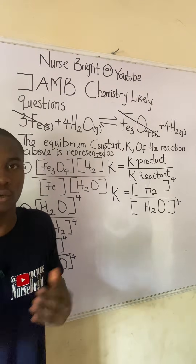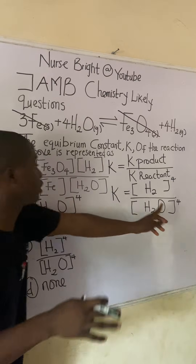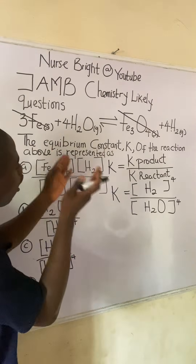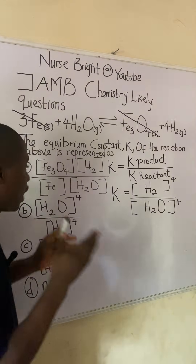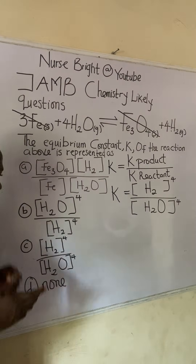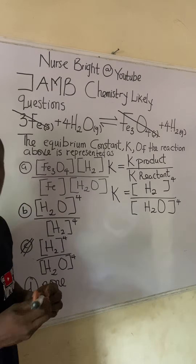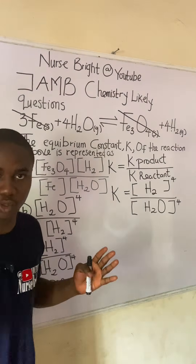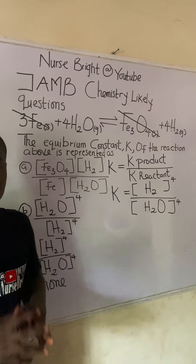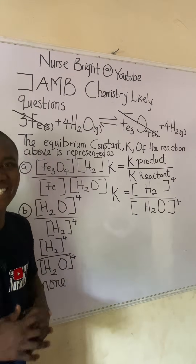You can see how questions under this aspect are solved without stress. It can be anything — if the coefficient were one million, you would raise it to the power of one million. With all we've done, let's quickly check if it corresponds to any of the options. It corresponds to option C. If you find this video lesson helpful, do well to click the subscribe button and share these videos with your friends. Thanks for watching.